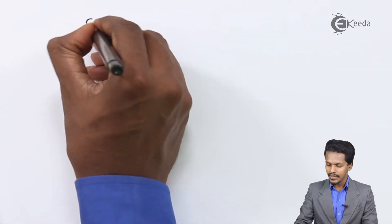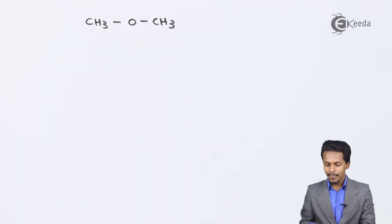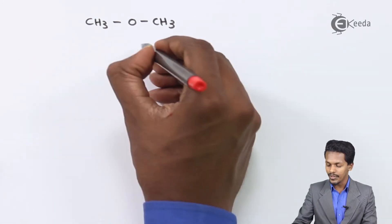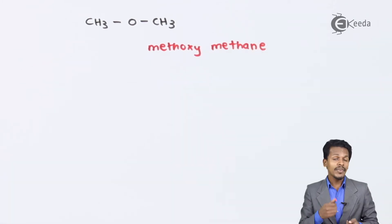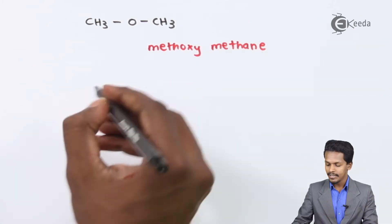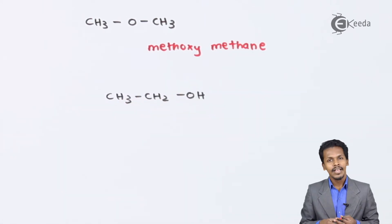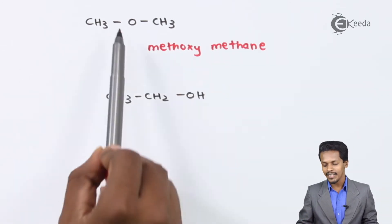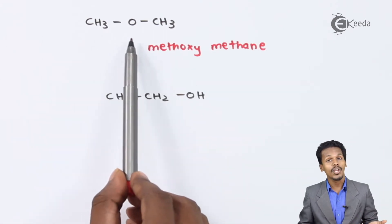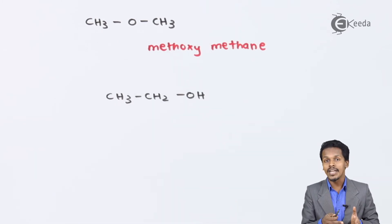For example, suppose we have the ether CH3-O-CH3, known as dimethyl ether or methoxymethane. Now if we compare this with the alcohol CH3CH2OH, the total number of carbon, oxygen, and hydrogen atoms is the same in both cases.